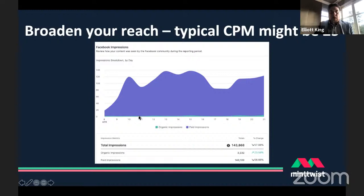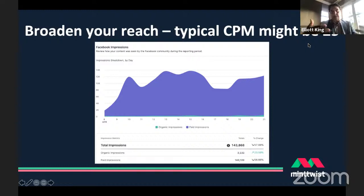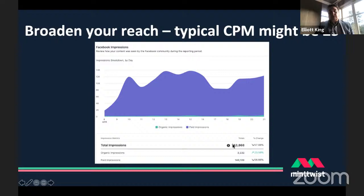With a certain amount of money, you can take a post generating a few hundred impressions per day up to 10,000 or more. A typical CPM — cost per 1,000 impressions — is around £5, though it depends on audience and platform. So for £500 you can reach 100,000 impressions. If your typical post is reaching 1,000 or 2,000, for a relatively low cost you can significantly increase that reach.